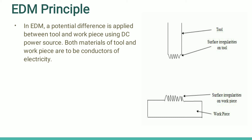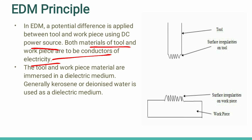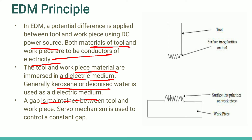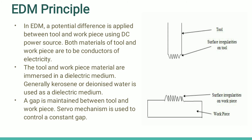In EDM, a potential difference is applied between the tool and the workpiece using a DC power supply, and both the workpiece and the tool must be conductors of electricity. The tool and workpiece are completely or partially immersed in the dielectric medium — kerosene or deionized water can be used. A gap is maintained between the tool and the workpiece, and a servo mechanism is used to maintain this constant gap throughout the job.